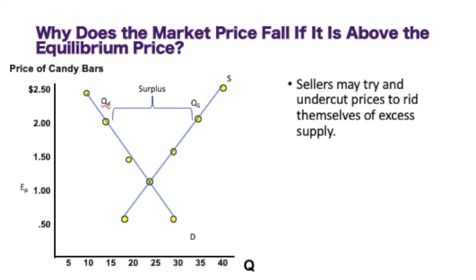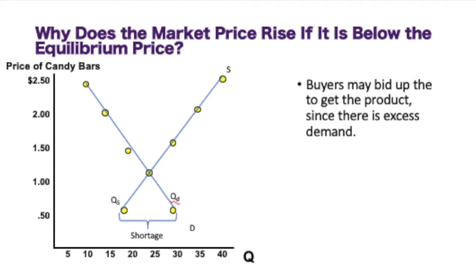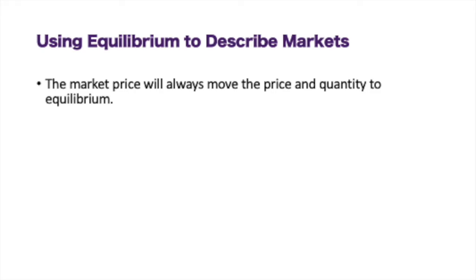Sellers will try to undercut prices to rid themselves of excess supply. If there is a surplus, sellers will start to cut prices so more people can buy into that excess supply. In a shortage, buyers will bid up the price to get the product since there is excess demand. For example, if there are only 5 candy bars and 10 people want to buy them at $1, the seller might sell for $1.25 to the top five willing payers — moving the shortage up toward equilibrium. The market price will always move price and quantity toward equilibrium.